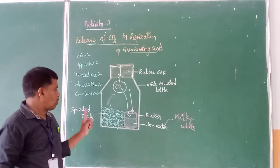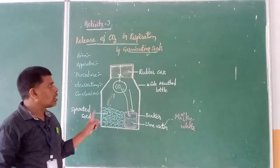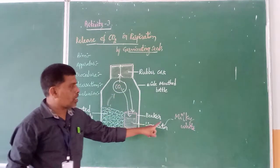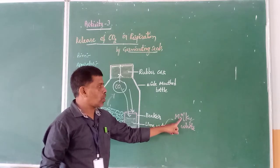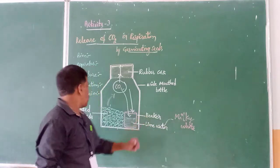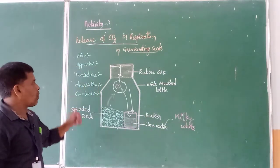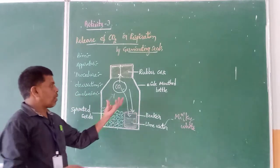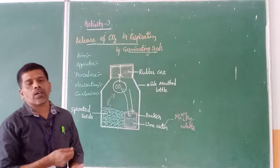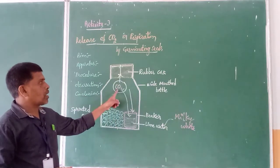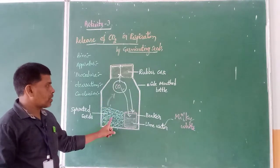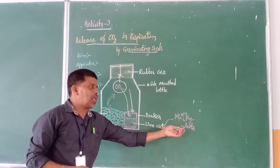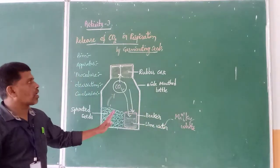During the process of respiration performed by the germinating seeds, carbon dioxide gas is emitted. That reacts with the lime water, changing its color to milky white. So this is our observation. Finally, the conclusion: from the above experiment we can conclude that carbon dioxide is produced by the germinating seeds during respiration, and it turns the lime water into milky white.